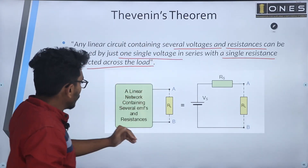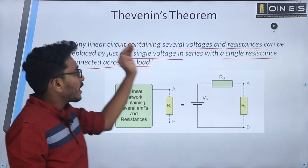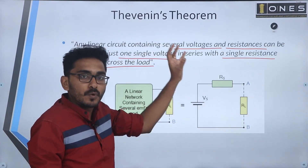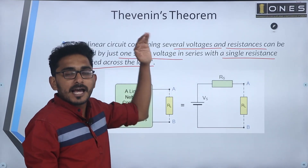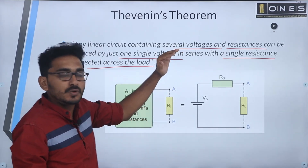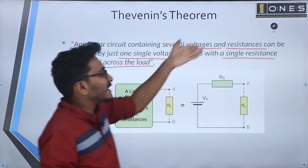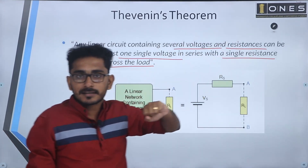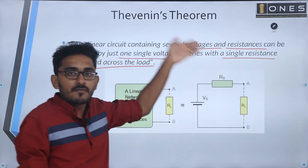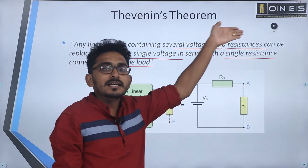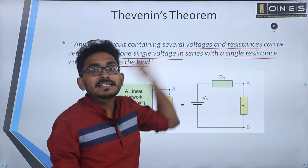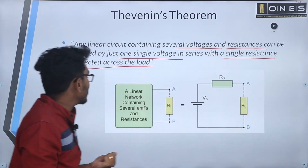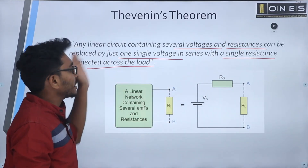Our linear active bilateral circuit is replaced by a single voltage source. That single voltage source represents the circuit, and it is in series with a single resistance. That voltage source is series connected to the load.